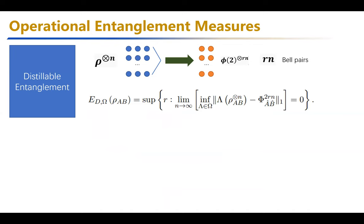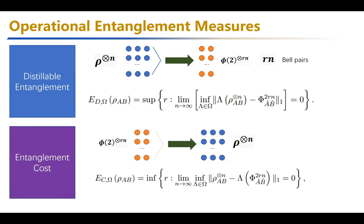There are two major operational entanglement measures. One is distillable entanglement — trying to maximize the rate at which you can distill Bell states from your given states with asymptotically vanishing error. The reverse one is called entanglement cost — it quantifies the minimum rate of entanglement required to prepare your given state in the asymptotic regime with asymptotically vanishing error.